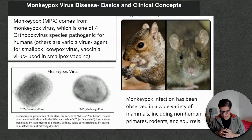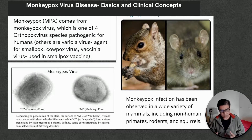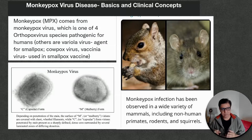Looking at the monkeypox virus structure, it has two forms: one is the capsular form (C form) and the other is the M form, known as the mulberry form. Depending on the strain, the M form or C form are covered with short hair-like structures, which gives them different forms of antigenicity by which the virus can enter the human body and infect host cells.